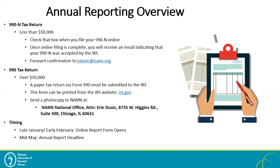If your chapter's gross receipts are over $50,000, please submit a paper form of the 990 to the IRS. The 990 is a paper form found on IRS.gov, and I would need a photocopy of the completed 990 sent to the National Office at my attention. Please send a photocopy to Erin Dubek at 8735 West Higgins Road, Suite 300, Chicago, Illinois 60631.